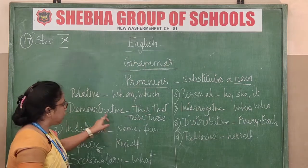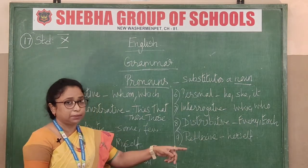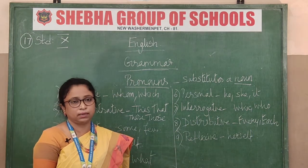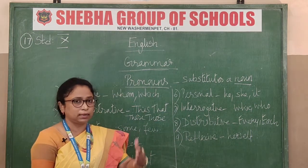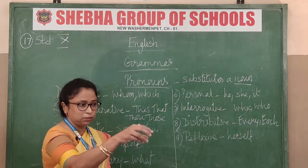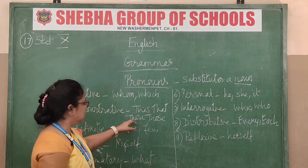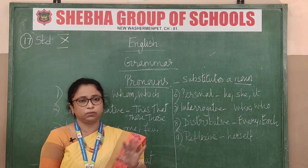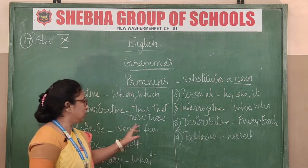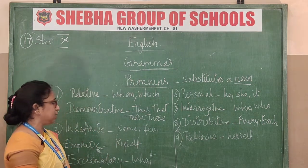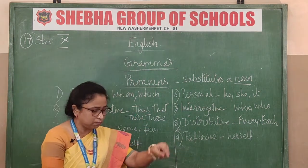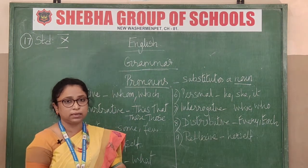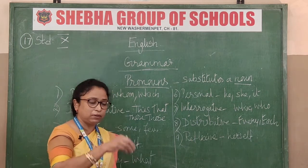The second type is the demonstrative pronoun. Words like 'this,' 'that,' 'these,' 'those' — you are pinpointing and demonstrating something particular. For example, 'This book is very interesting' or 'This mango is very sweet.' You are specifically indicating a particular thing, so it is called demonstrative.